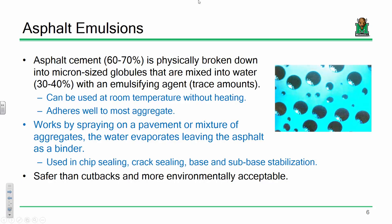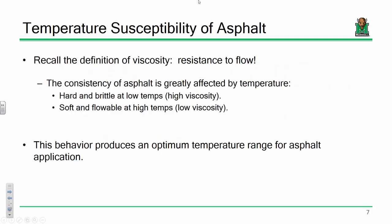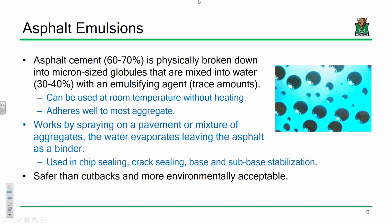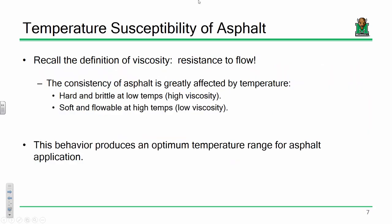Cutbacks and emulsions are primarily used for cold mix maintenance applications; hot mix binders are used for large-scale paving operations. Asphalt's properties and behavior are highly dependent on temperature. Let's go back to fluid mechanics — what's viscosity? You all should know this. Viscosity is the measure of a substance's or fluid's resistance to flow. Does molasses have a high viscosity or a low viscosity? At low temperatures asphalt is very hard and brittle — high viscosity. On the flip side, if asphalt is really hot, it gets soft and flowable — low viscosity.